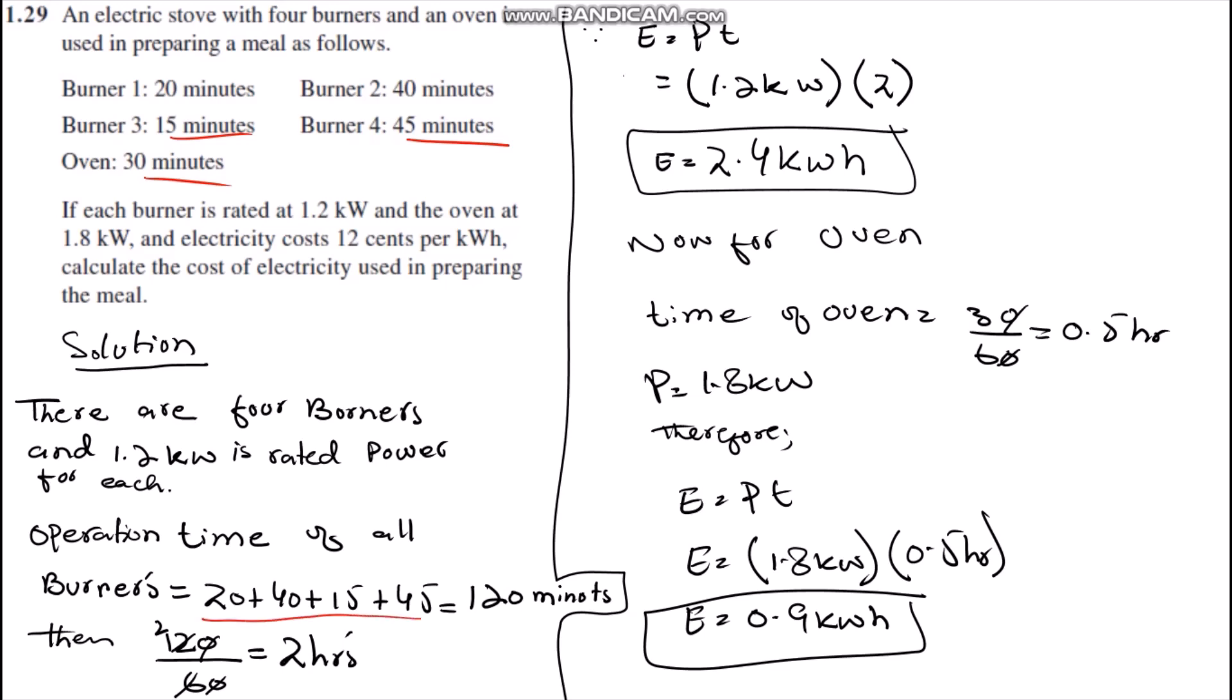We are working for burners. Therefore, we simply add all the time of the burners and we get 120 minutes. In order to get time in hours, we simply divide 120 by 60, therefore we get 2 hours. We know the equation of energy which is P multiplied by T. Therefore, we simply multiply 1.2 kilowatt with 2 hours and we get 2.4 kilowatt hours.